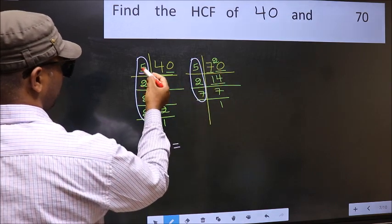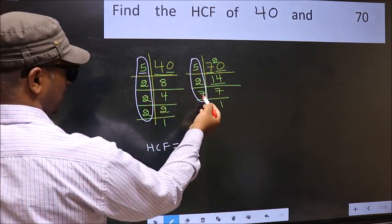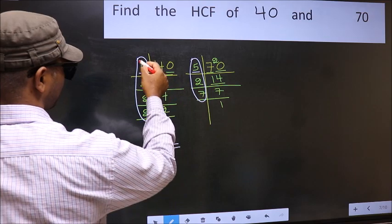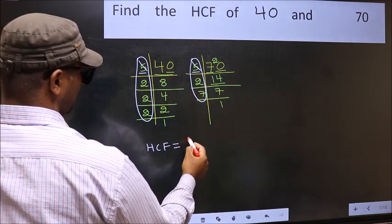So now let us find the numbers which should be present here and here. Starting with the number 5, do we have 5 here? Yes. So cut 5 right here.